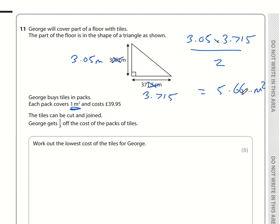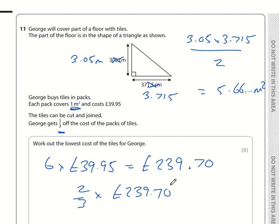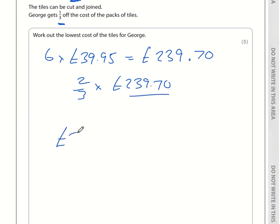The area of this triangle is 5.66 square meters. We need to buy packs of one square meter. I'll round up to six packs. So six times £39.95, which is £239.70. George is getting one third off, so he pays two thirds of £239.70. We divide by 3 and multiply by 2. 239.70 divided by 3 multiplied by 2 is £159.80.